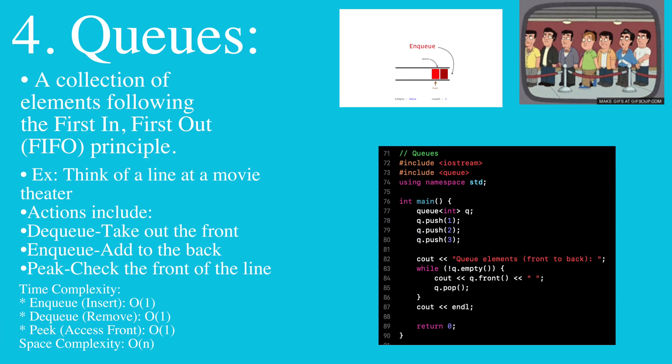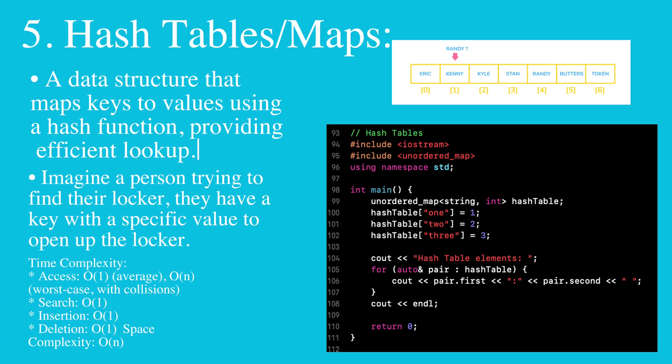Queues are a collection of elements following first in, first out. Then we have hash tables, which map keys to values using a hash function.